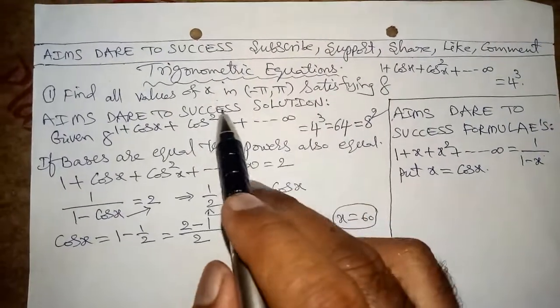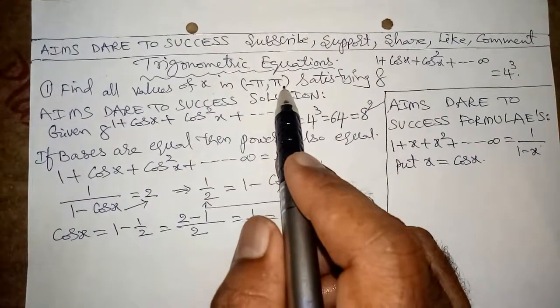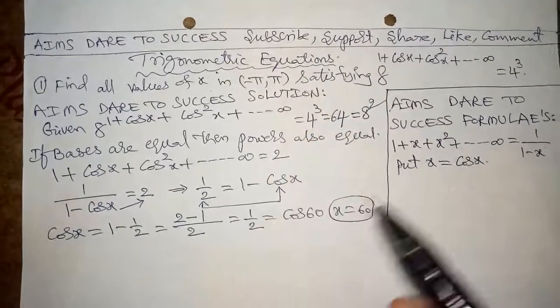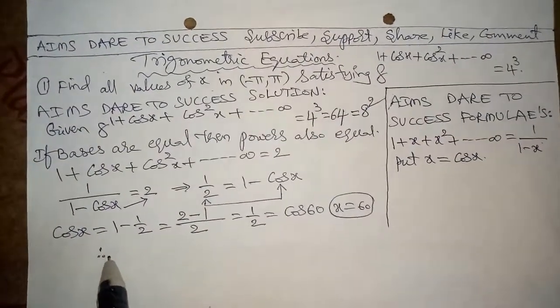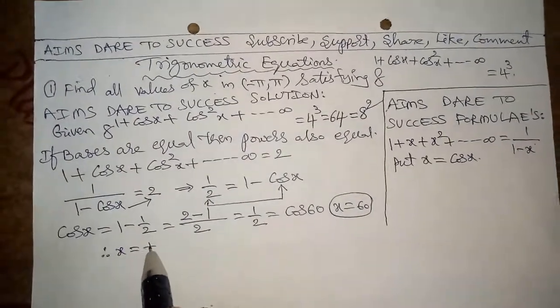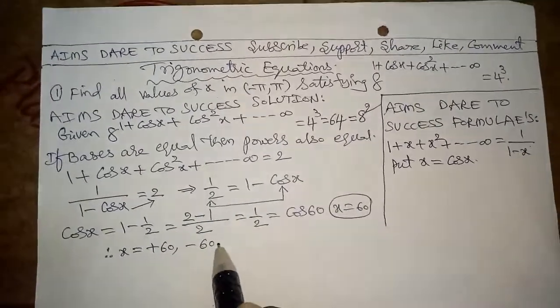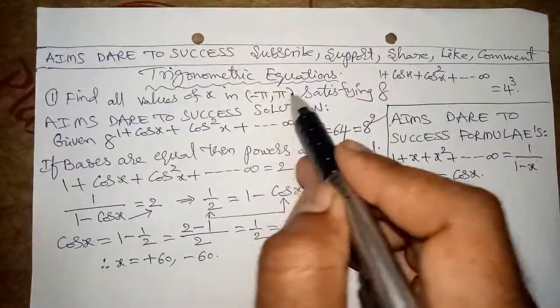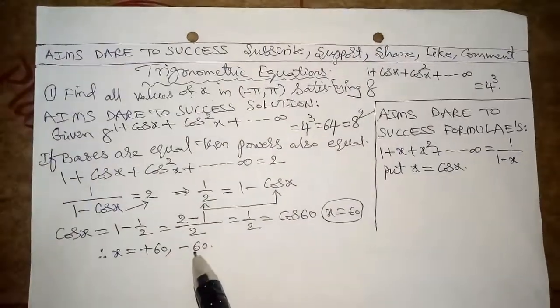But you can check all values of x in between −180° to 180°, means we can get x = +60°, −60° in between −180° to 180°.